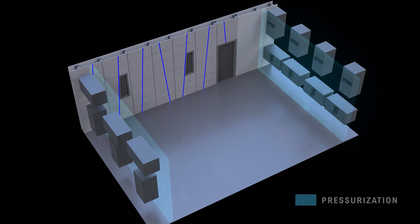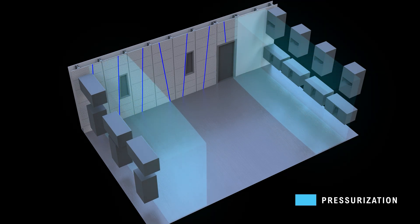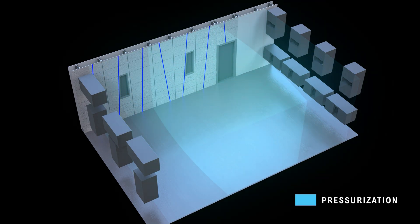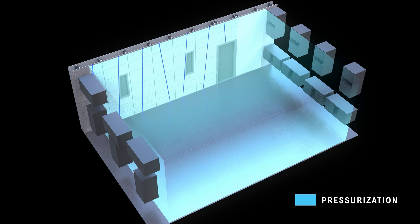we can use those subs to help the front subwoofers pressurize the room. In a solidly built and sealed room, this can provide an extra 10 dB of output in the infrasonic region. If your subs are up for the challenge, it can be a lot of fun.